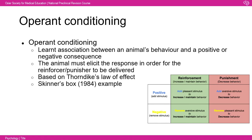Skinner's box is an easier example: in 1938, Skinner placed a rat in a box and recorded baseline lever presses. When the box was activated so that pressing the lever released a food pellet, the rat initially pressed it accidentally, but soon learned to run straight to the lever, and the frequency of lever pressing increased automatically to gain the food — demonstrating positive reinforcement.